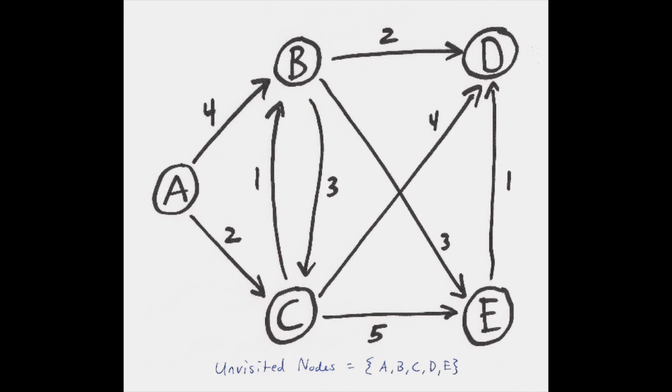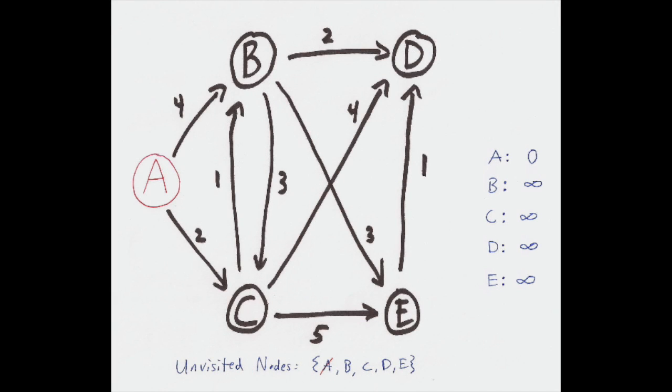Let's use the following graph for our example. We'll keep a list of unvisited nodes at the bottom. Our first step is to pick the starting node. Let's choose A. We'll use the table on the right to keep track of distances. Remember the distances we are measuring are from our starting node, A. We put zero for A and infinity for the others as we haven't visited them yet.